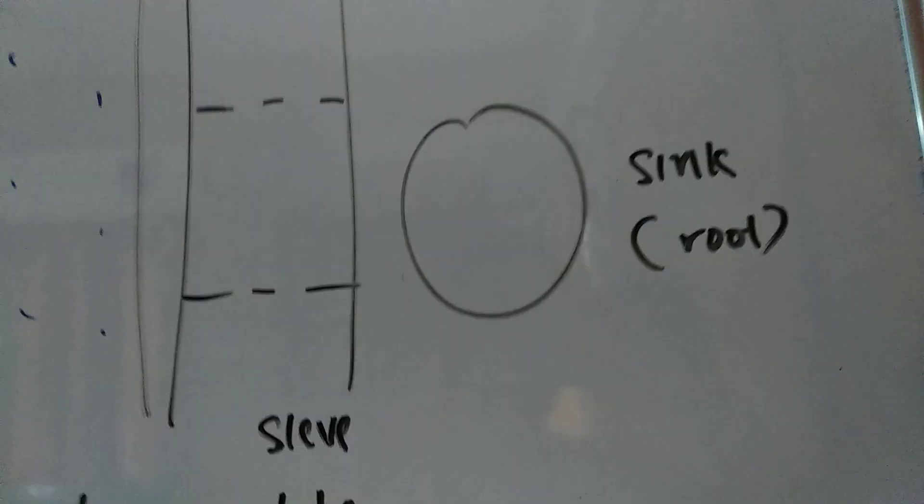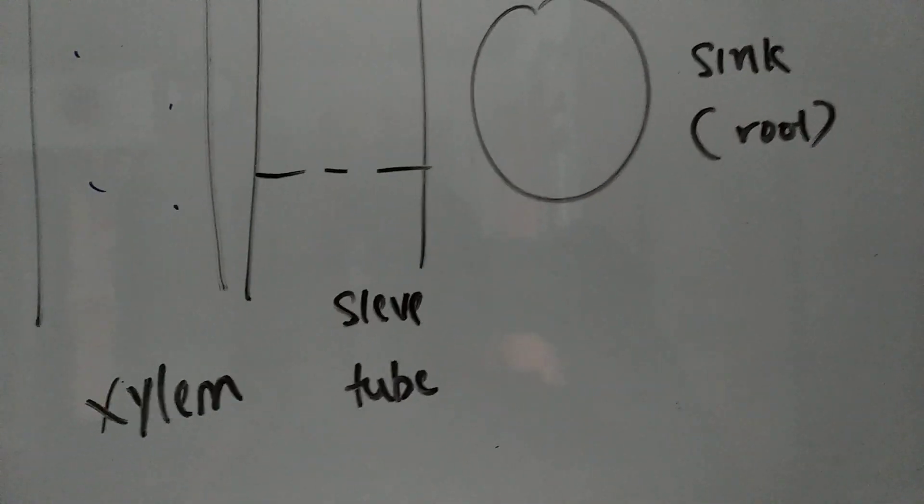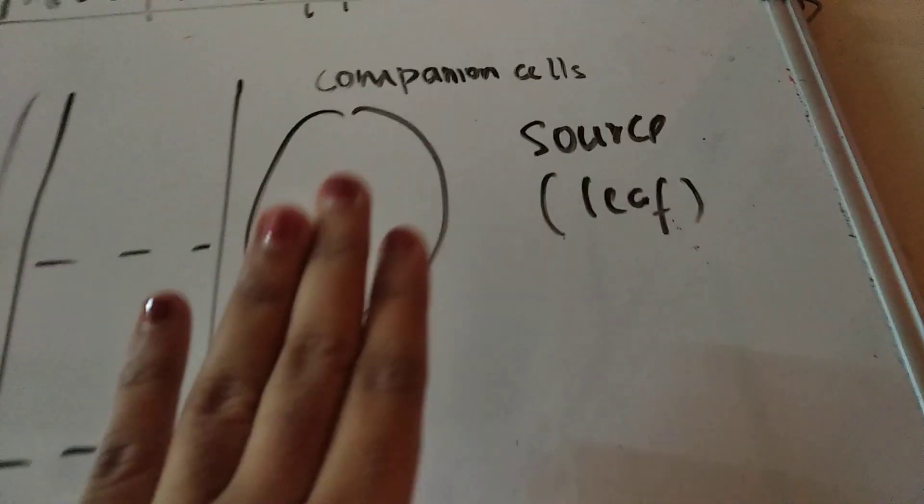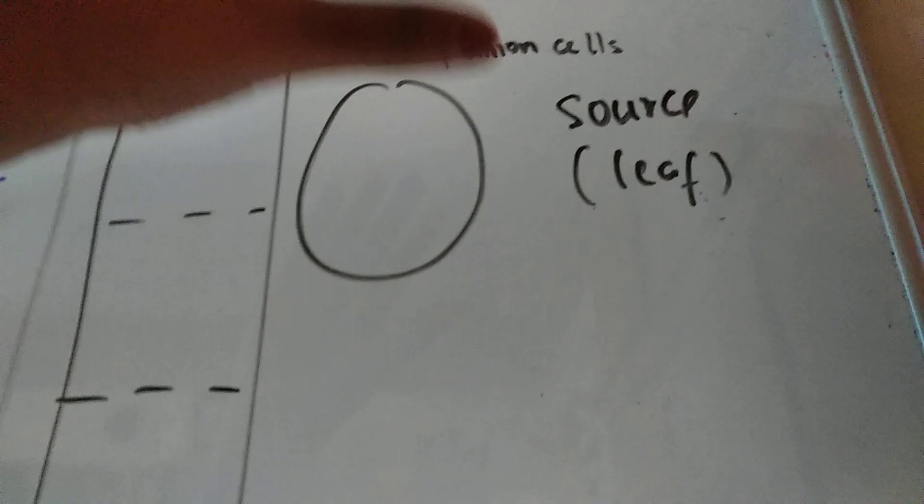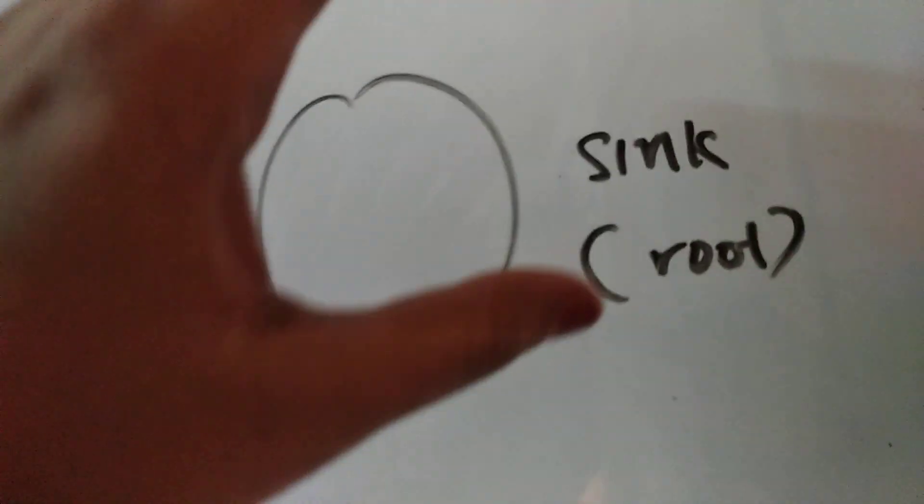So there's a lot of sucrose inside of this, and this is our root which doesn't really have anything right now. It does have a few solutes but not as much as the leaf.